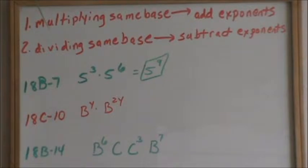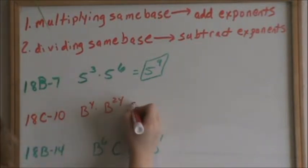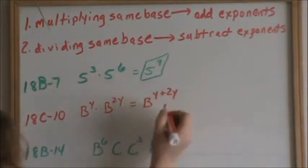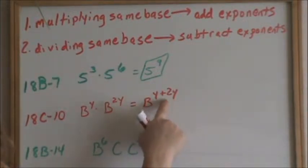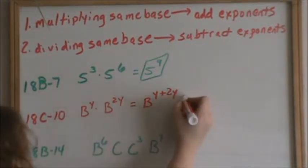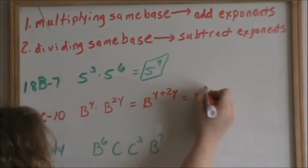On 18c10, we have the same bases, the b is the base, and we are multiplying, so we add our exponents. So to write it out in a long way, this would be y plus 2y. We can combine y's. The coefficient on this y is a 1. So 1y plus 2y is b to the 3y.